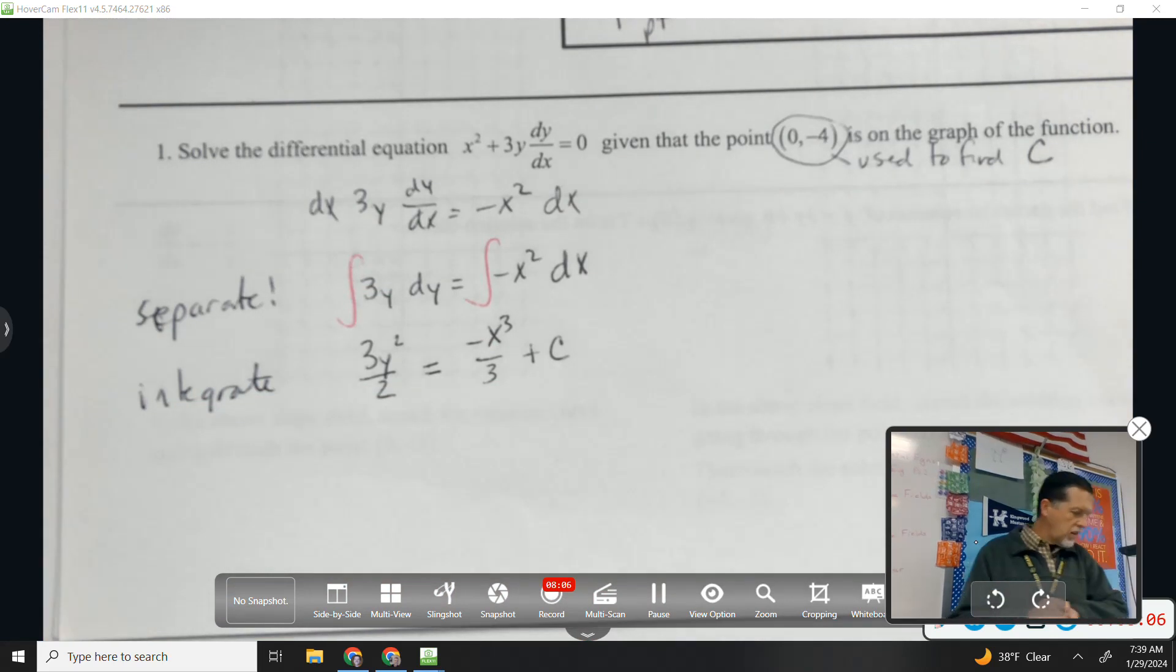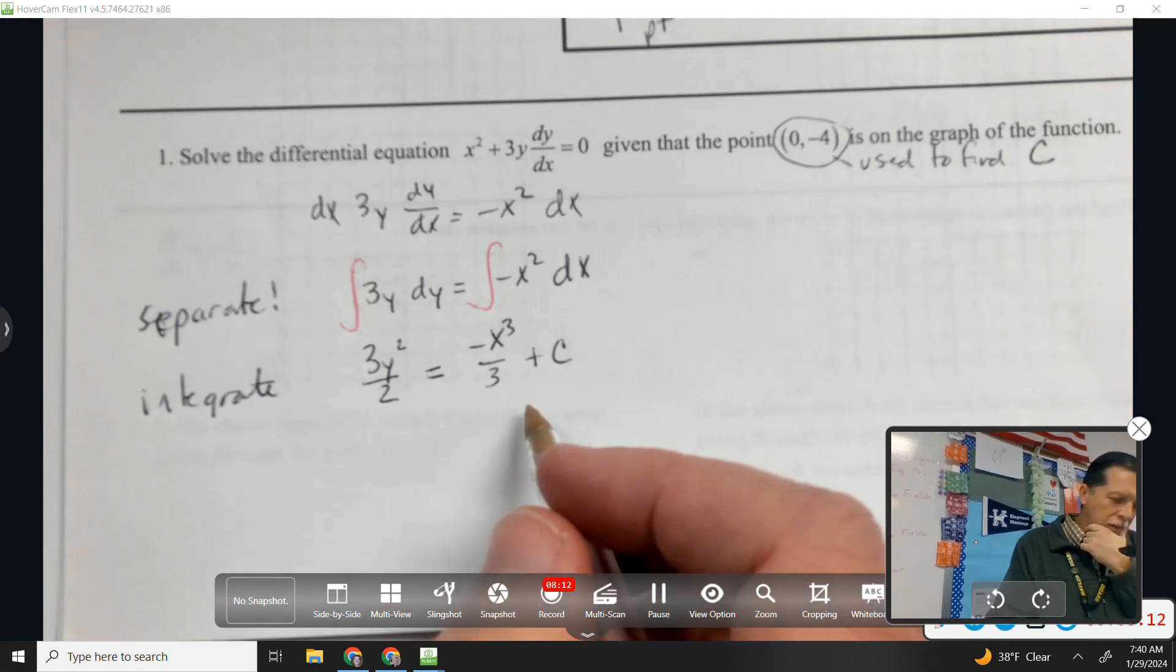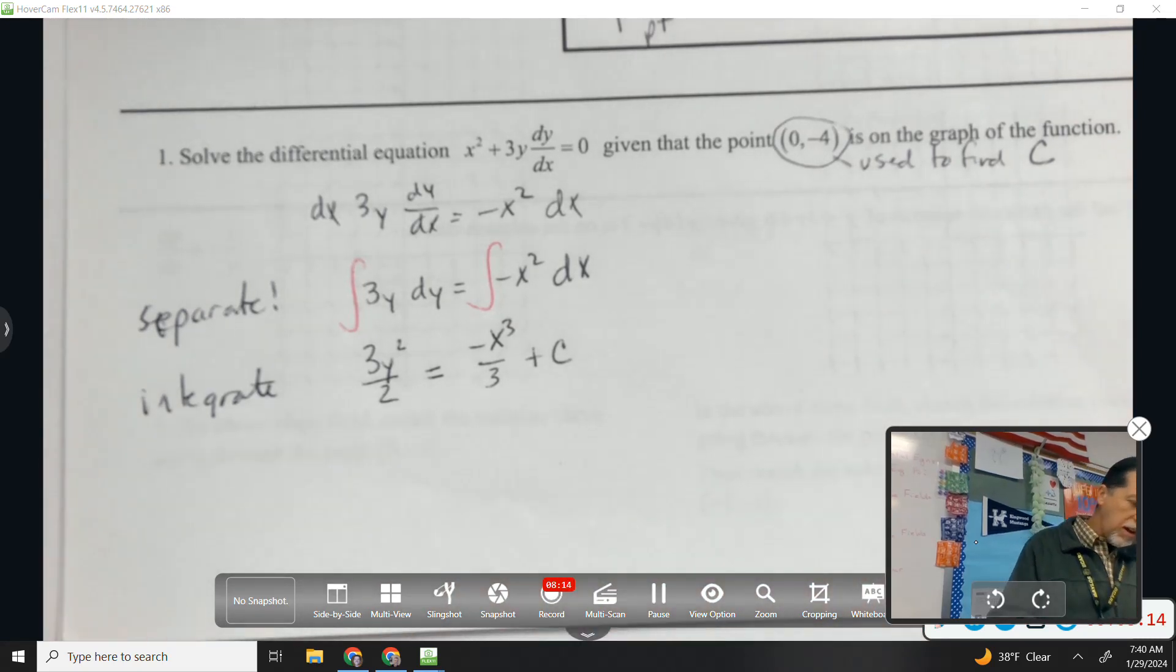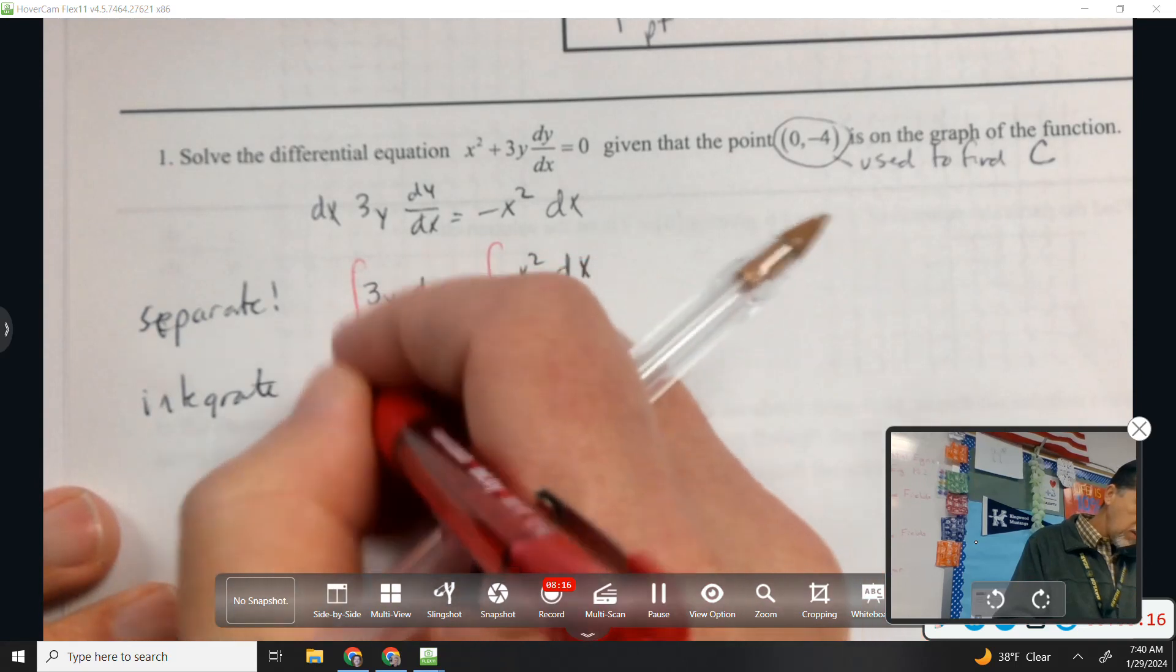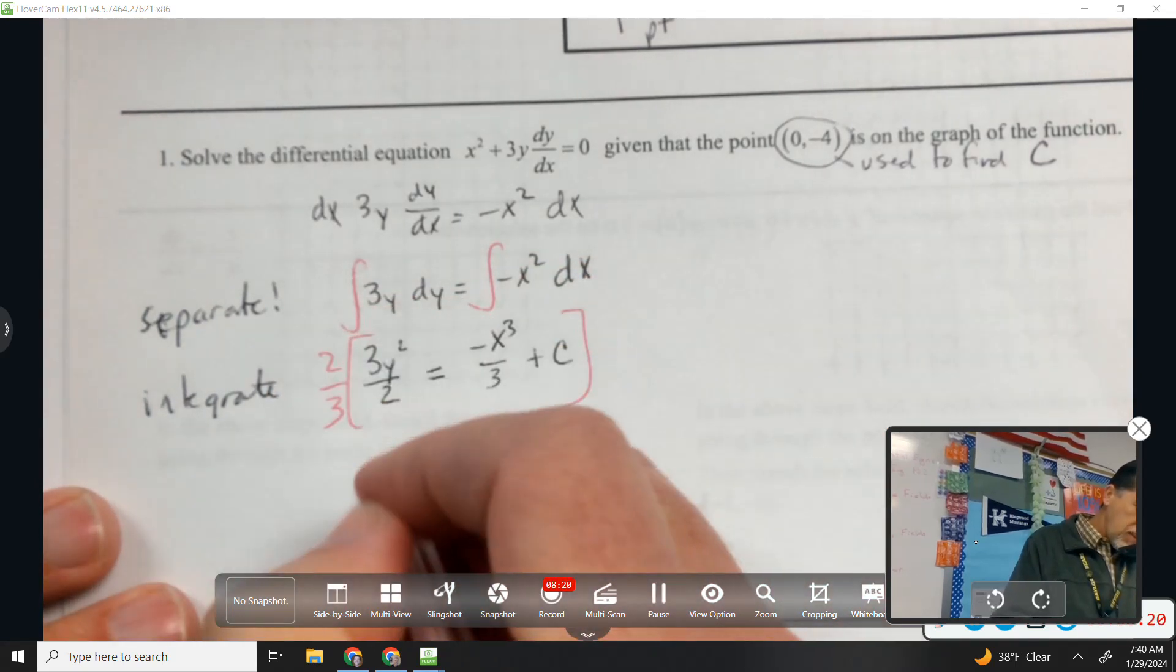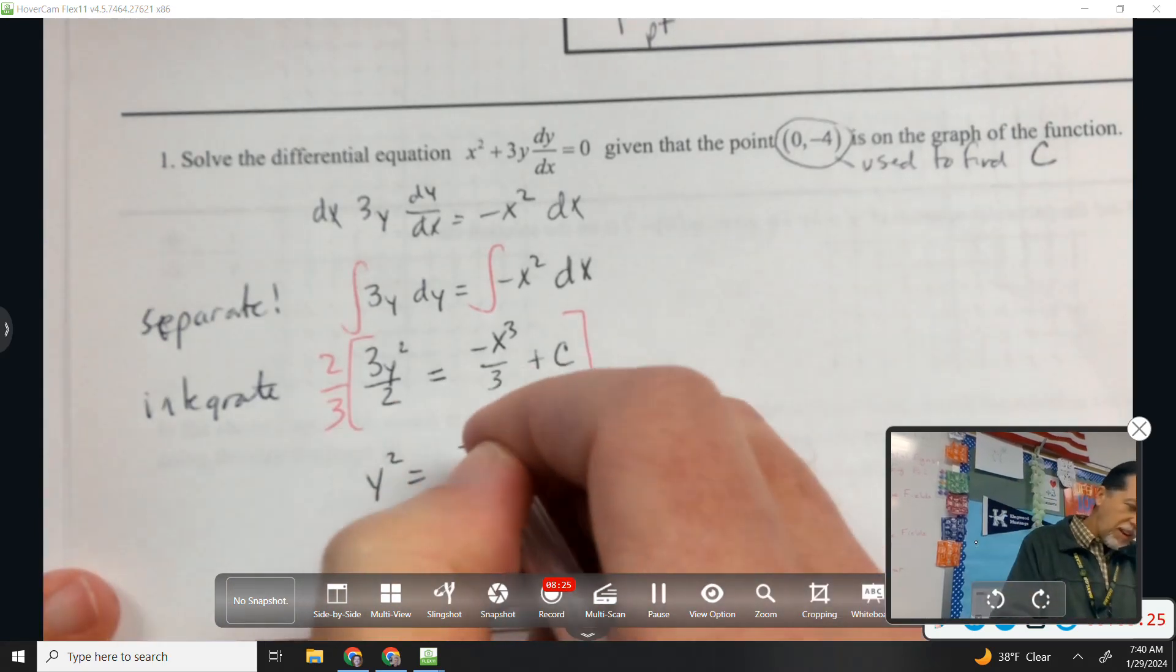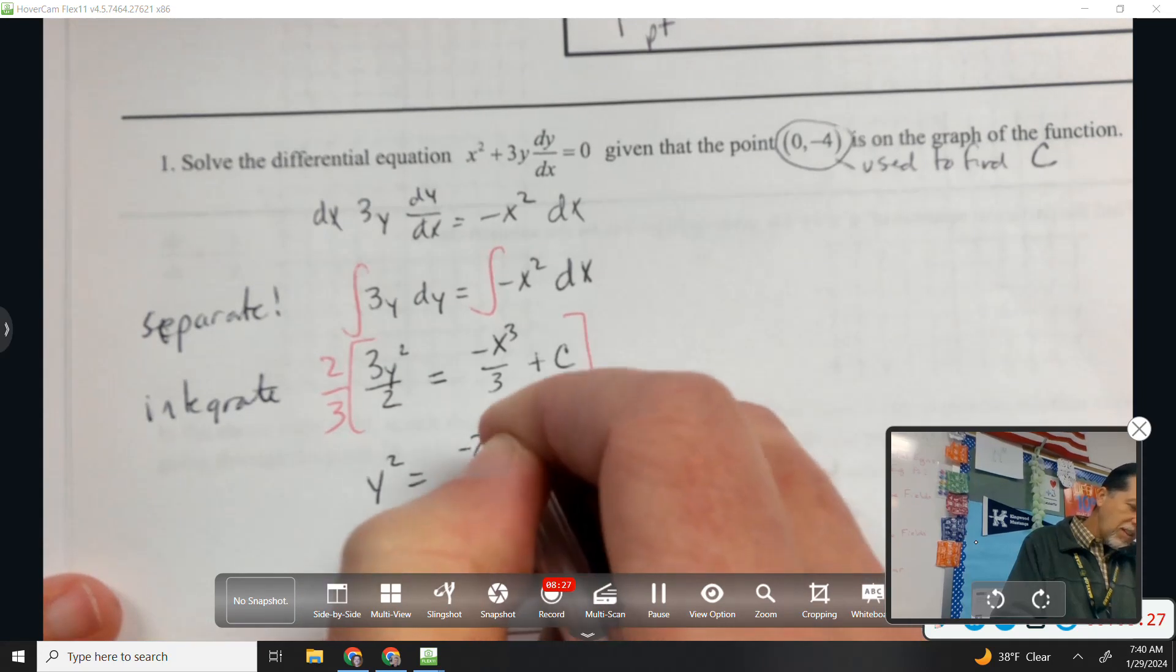Separate, integrate. Let's see, I think I want to clean this up a little bit. Let's multiply by 2/3. I'll get y squared by itself. And on the other side I'll have negative 2/9 x cubed.